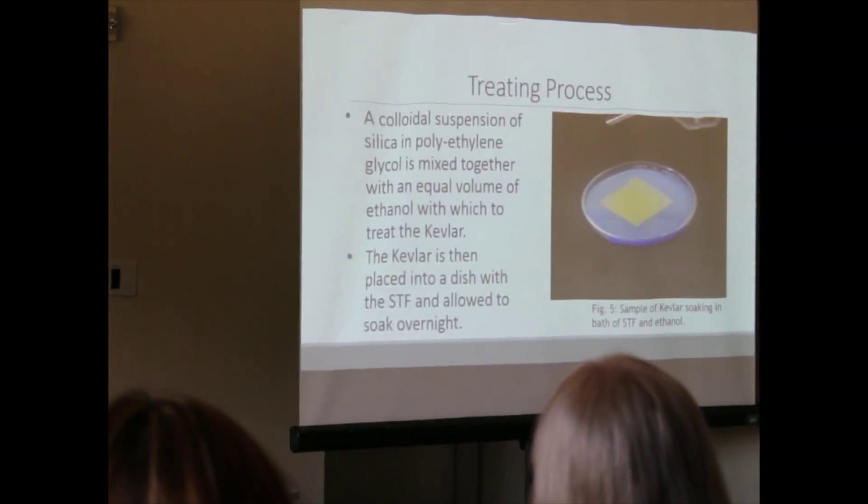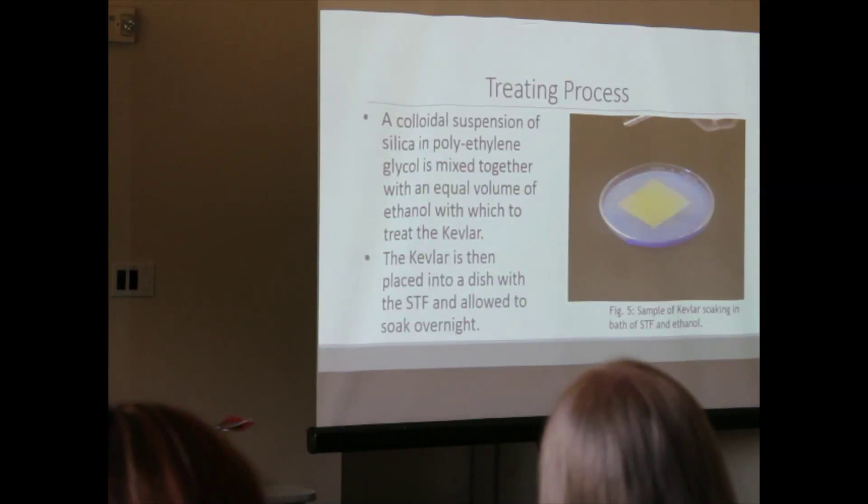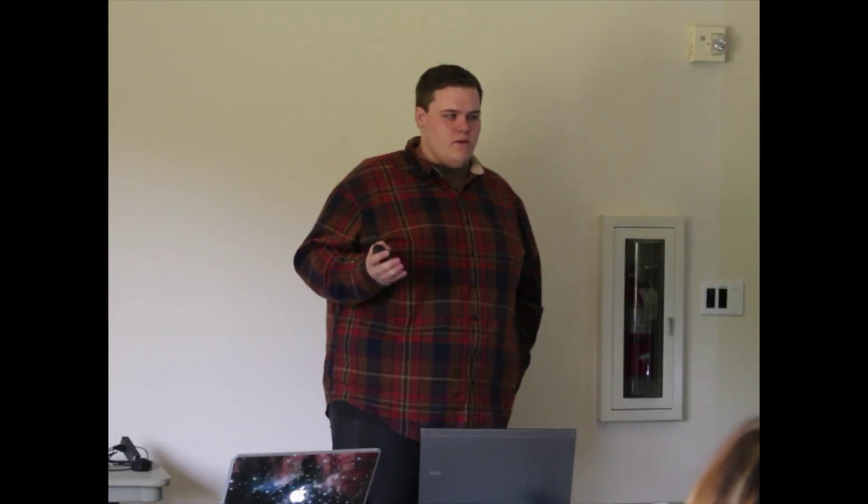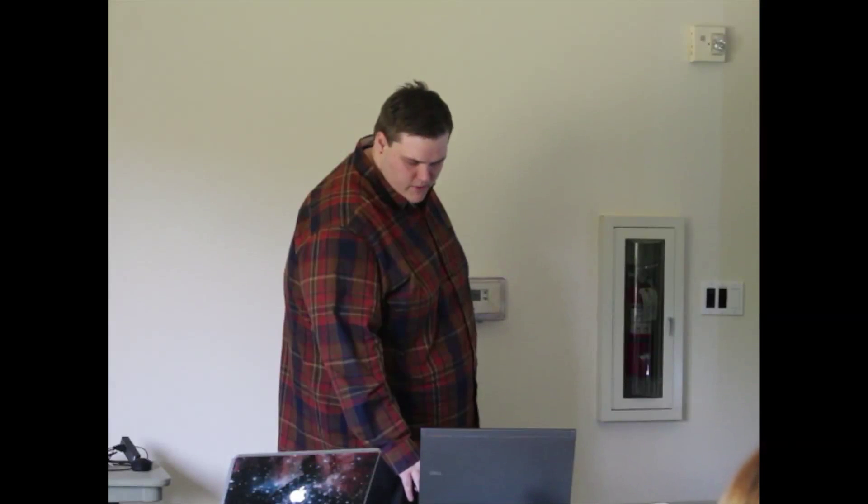So whenever I was working with it, I was working with small samples of Kevlar. I would use a colloidal suspension of silica and polyethylene glycol, and I mixed it together with some ethanol to facilitate the impregnation of the silica particles into the fibers of the Kevlar. And that would just allow it to soak overnight in this shear thickening mixture. After that, after the Kevlar was saturated, we baked it in an oven to evaporate the ethanol. And that was mostly just to do the imaging. You wouldn't necessarily do that if you were doing it for actual armor production. And then after they were dried, we cut them into smaller squares so they would fit onto the SEM chuck. And we used SEM to capture the magnified images of the samples.